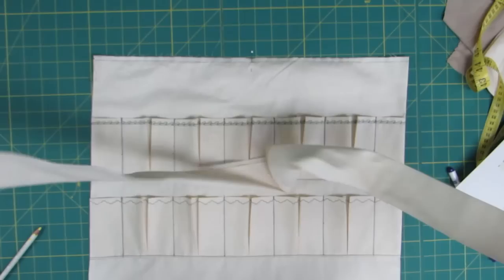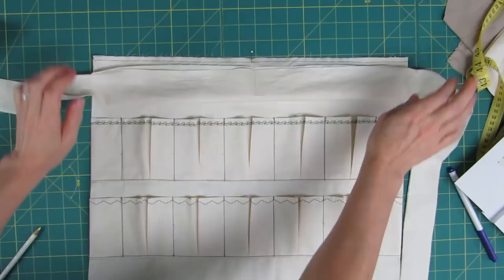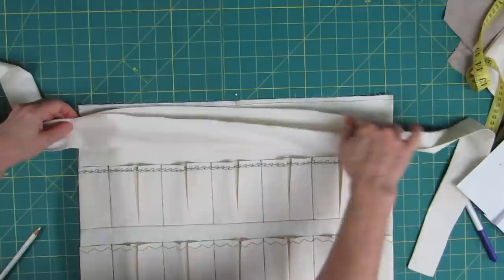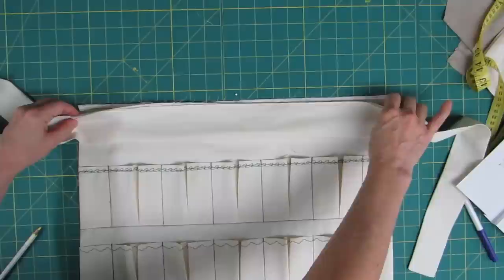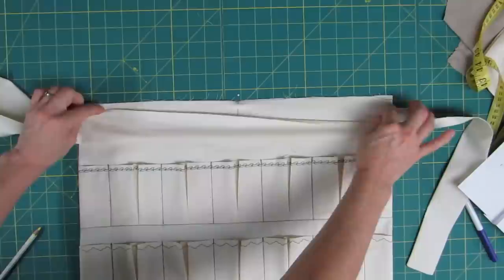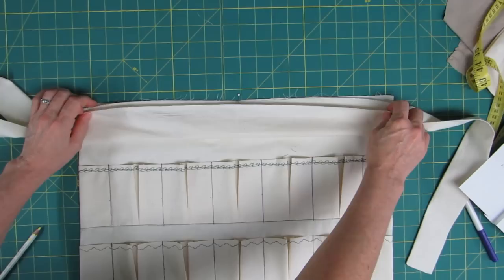The tie is all sewn up and turned and pressed. Now all we need to do is attach it to the apron body. To attach it to the apron body, we have our center of the tie. And you want to put right sides together like this and pin the body to the tie. And then take it over to your sewing machine and sew your one centimeter seam here.